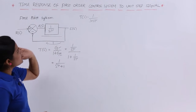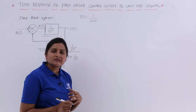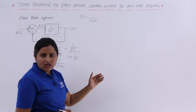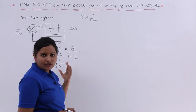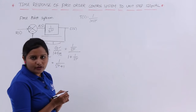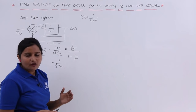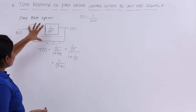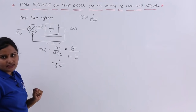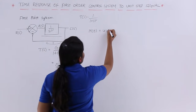To get the time response of this first order system, we apply a test signal and observe the response. For this analysis, we consider the unit step signal. The unit step signal U(t) equals 1 for t ≥ 0 and 0 for t < 0. The input of the system R(t) is taken as U(t), which equals 1 for t ≥ 0.